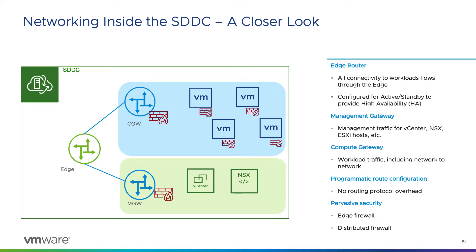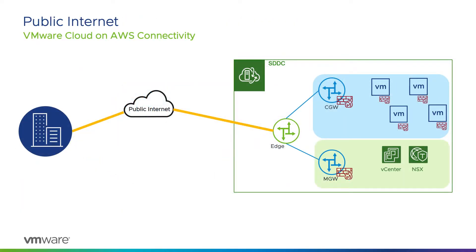Security is managed by edge and distributed firewalls. There are a few different ways we can establish connectivity between the on-premises environment and the SDDC. The most basic option is to simply allow access to vCenter over the public internet. While this does bring some inherent risk, you can choose to only allow specific addresses by creating firewall rules within the management gateway. Note that by default, we deny all incoming traffic. This might be ideal for testing with a single node or a proof of concept.